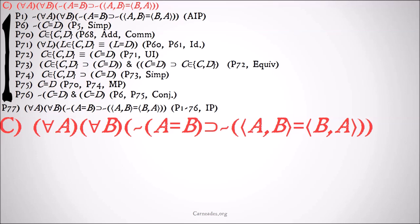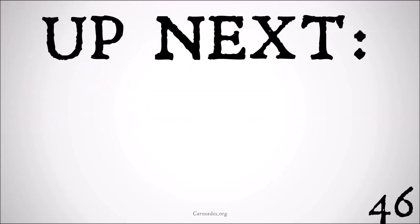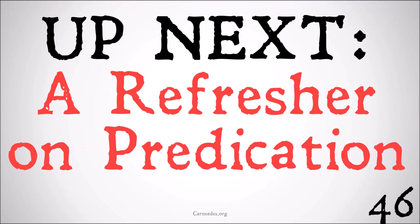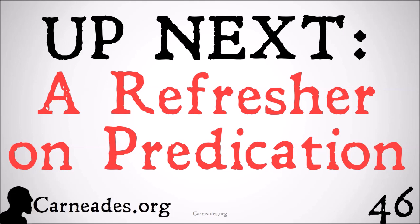But hopefully, broadly, that makes sense. I mean, this should be a very intuitive idea: if you have an ordered pair where order matters, and the two sets aren't equal to each other, then those two ordered pairs with the values switched can't be equal to each other. So hopefully this is pretty intuitive — this is just showing the mechanics of why that works. Up next, we are moving on to a refresher on the idea of predication and how we're going to apply it to set theory. Watch this video and more here at Carneades.org.